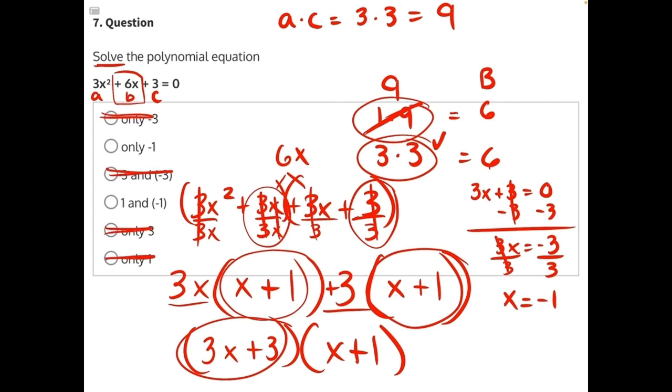Now we need to set x plus 1 equal to 0, our other binomial. Here 1 is being added, so the opposite operation would be subtraction. These ones will cancel, leaving us with x equals negative 1.